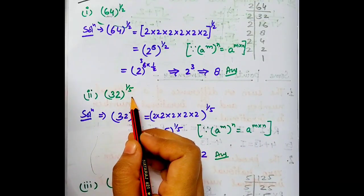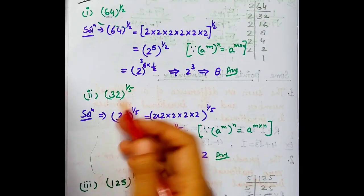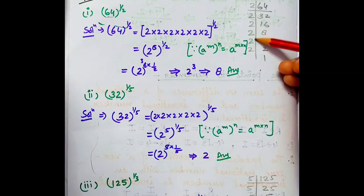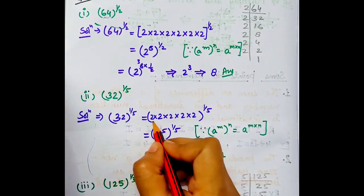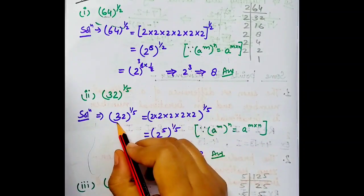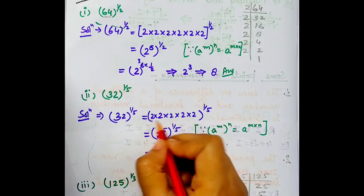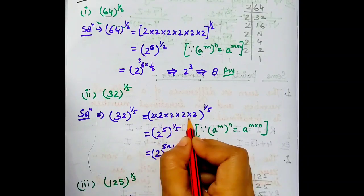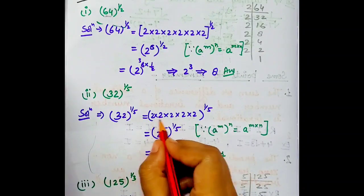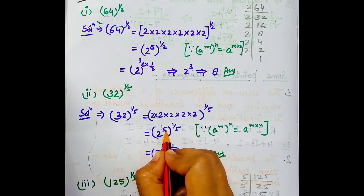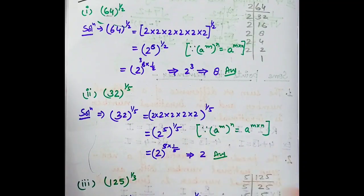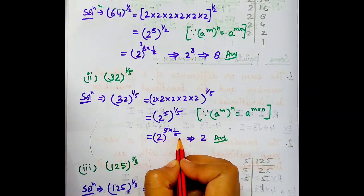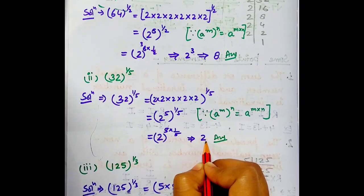Second part: 32 to the power 1 by 5. Isko bhi waise hi karenge. 32 ka prime factorization karenge. 2 ko jab 5 times multiply karenge to hume 32 milta hai. To yahan pe iske factors likhke: 2 to the power 5, whole to the power 1 by 5. Yahan pe bhi power of power ka formula use ho raha hai, to dono jo powers hain woh multiply ho jayengi. Answer hume 2 milega.